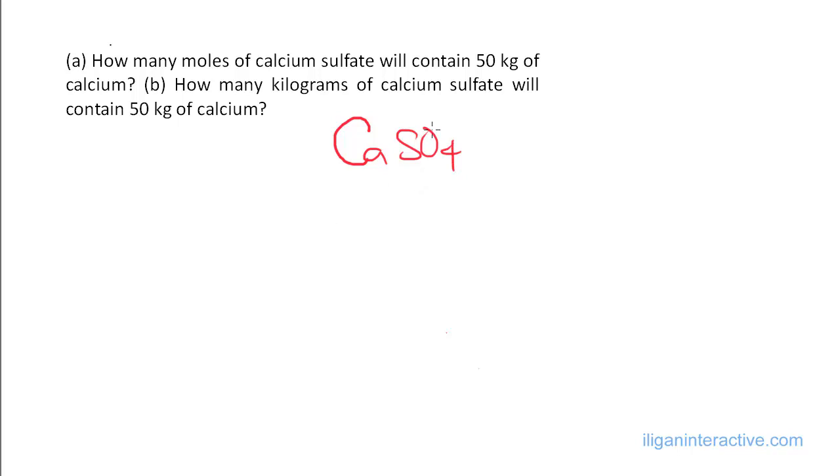And it's also important that we know the molar mass of calcium and calcium sulfate. So, when we look at the periodic table, we see that if we add the molar masses for calcium, sulfur, and oxygen, we will get these values, 136.14 gram per mole for calcium sulfate, and for calcium alone, it's 40.08 gram per mole.